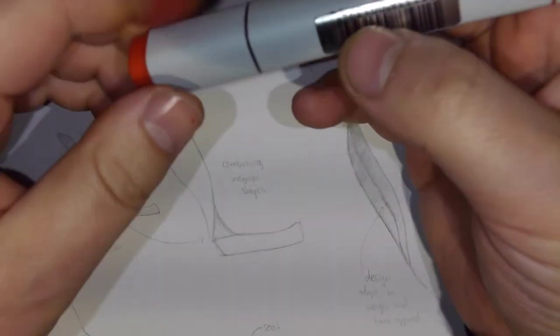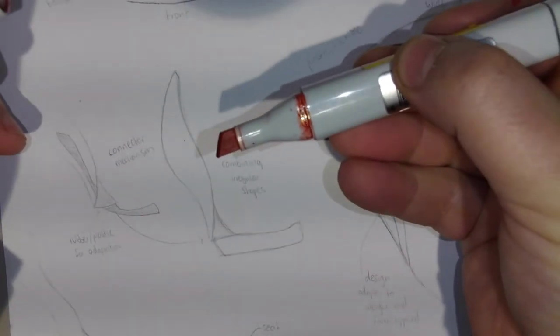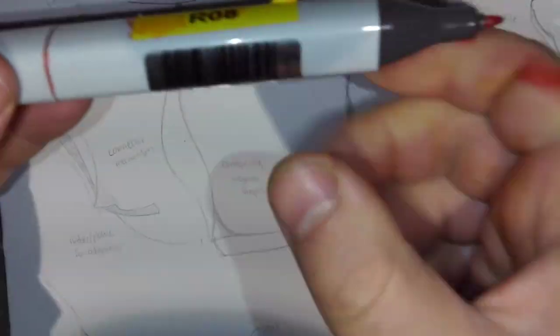So first of all, you need to understand that the Copic marker has the fine tip as well as a broad tip. The fine tip is here.